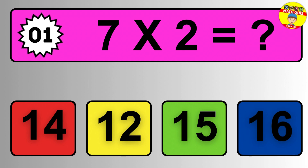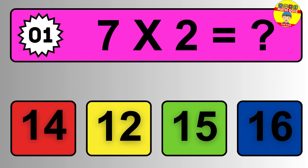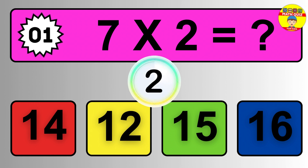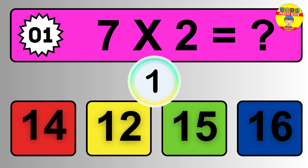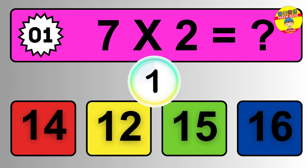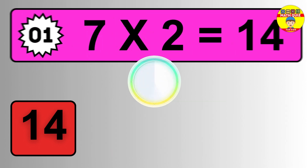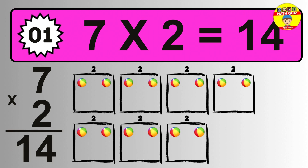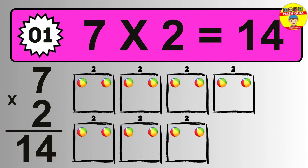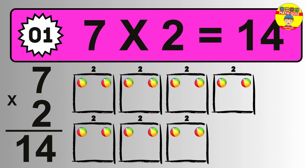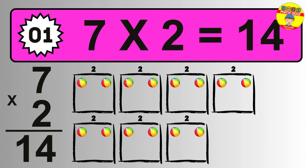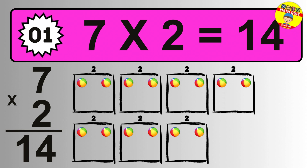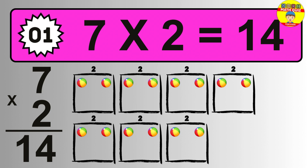Question one: seven times two equals what? The answer is seven times two is fourteen. To calculate, we have seven groups with two balls each. So how many balls do we have? Fourteen balls.